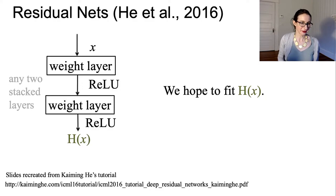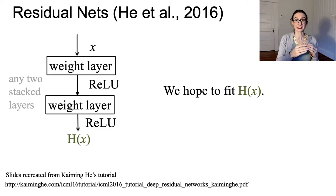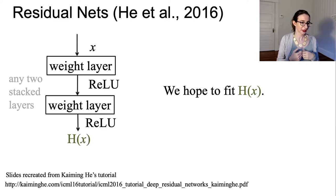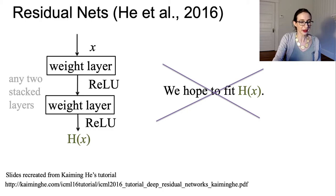Residual nets are a really powerful and very simple tool. In standard neural networks, you take your input x, send it through the network, get h(x), and hope that h(x) predicts the label y — you're fitting a model called h(x). In residual nets, that's not exactly what they do; they actually try to model just the residual of x.